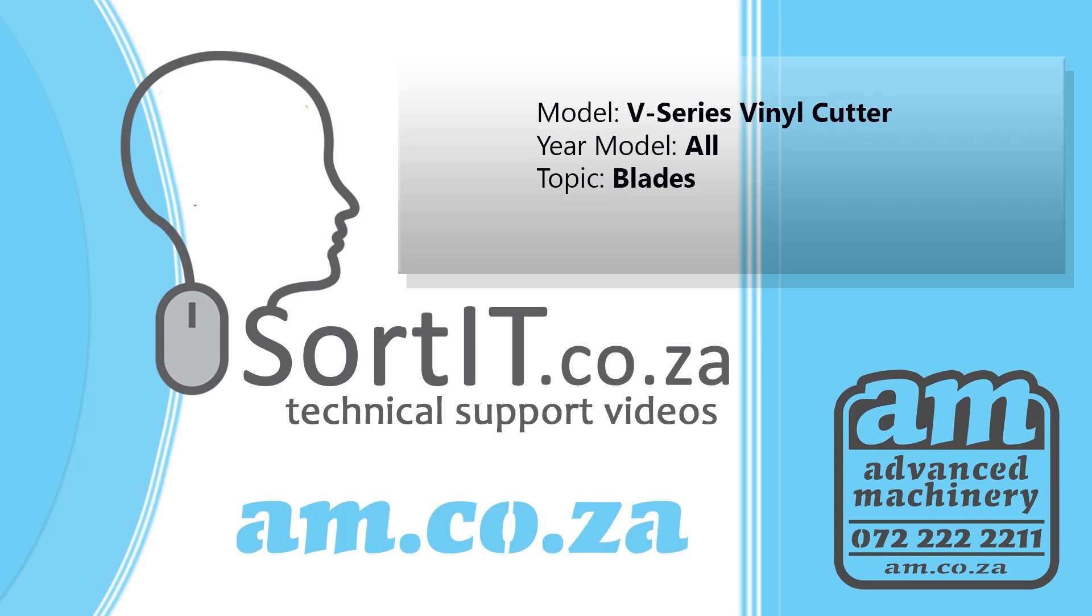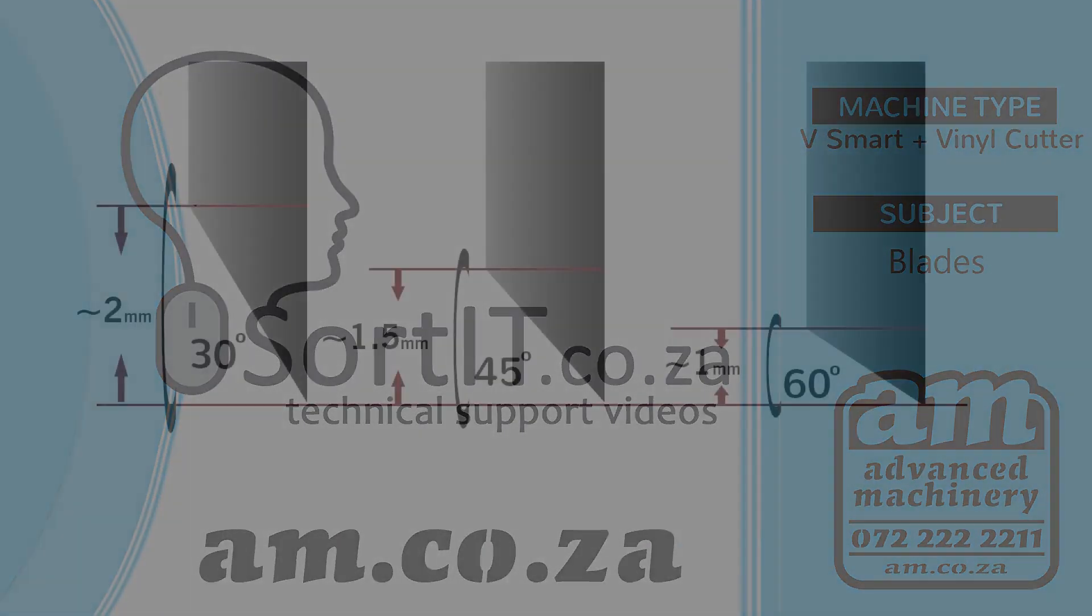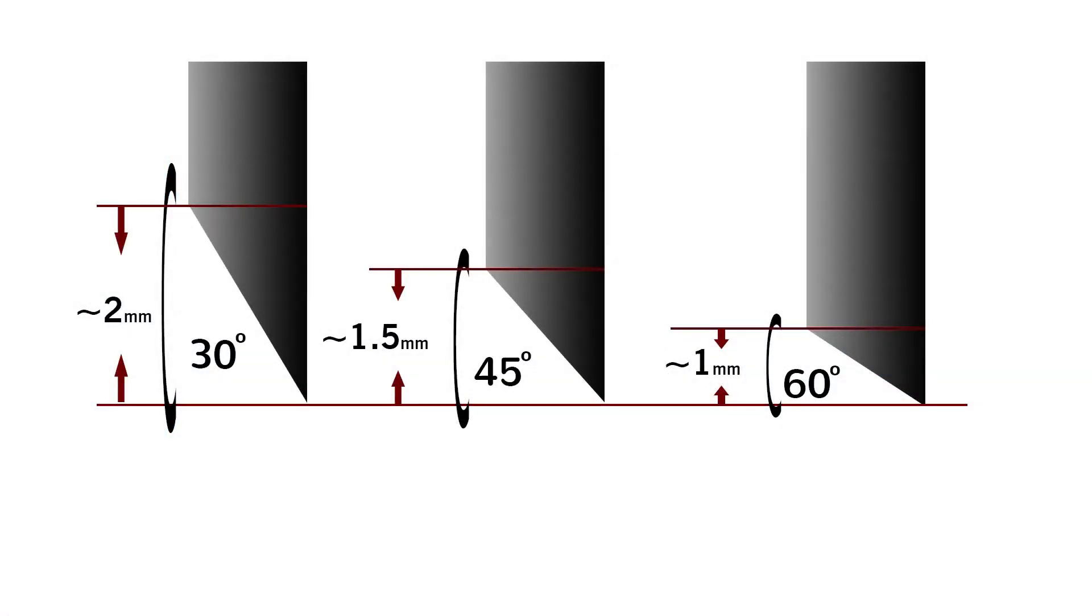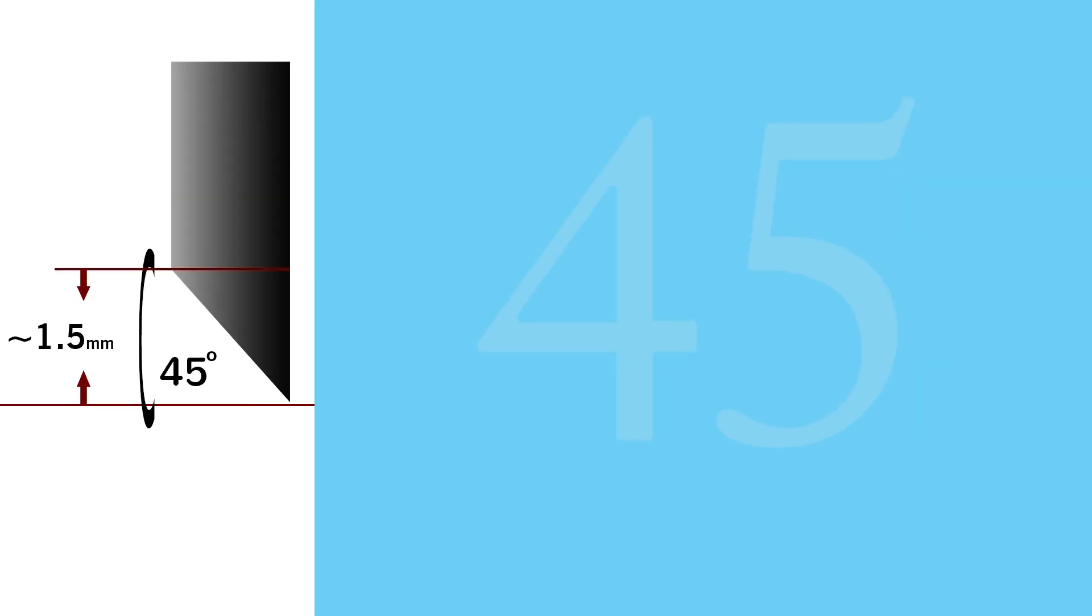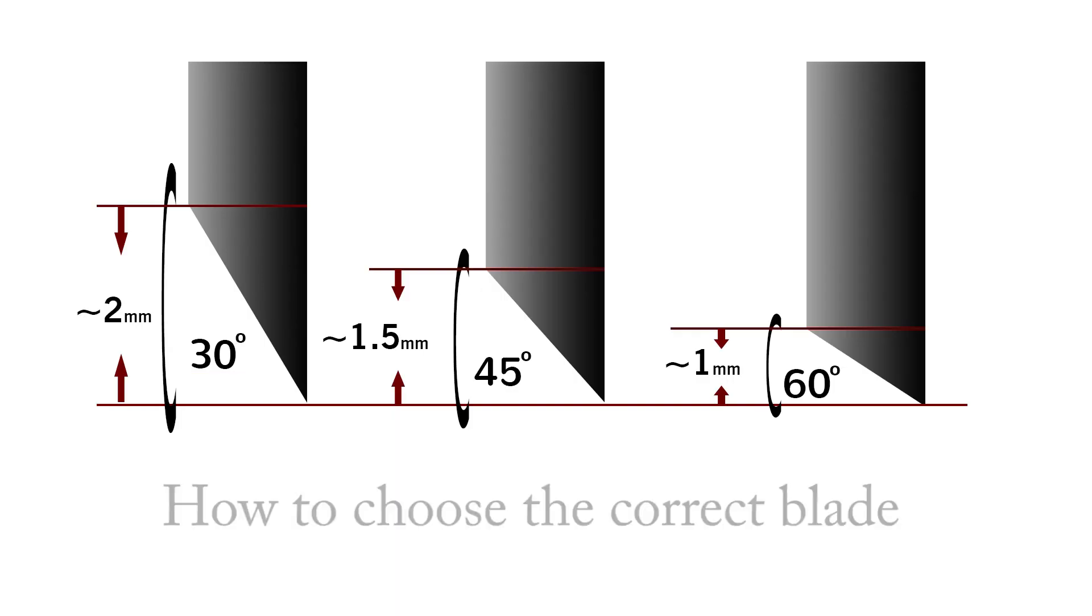Thank you for watching another episode of Sort It video, brought to you by am.co.za. At am.co.za we sell three different angle blades: 30 degrees, 45 degrees, and 60 degrees. What's the difference and how to choose the correct blade for your vinyl cutter?